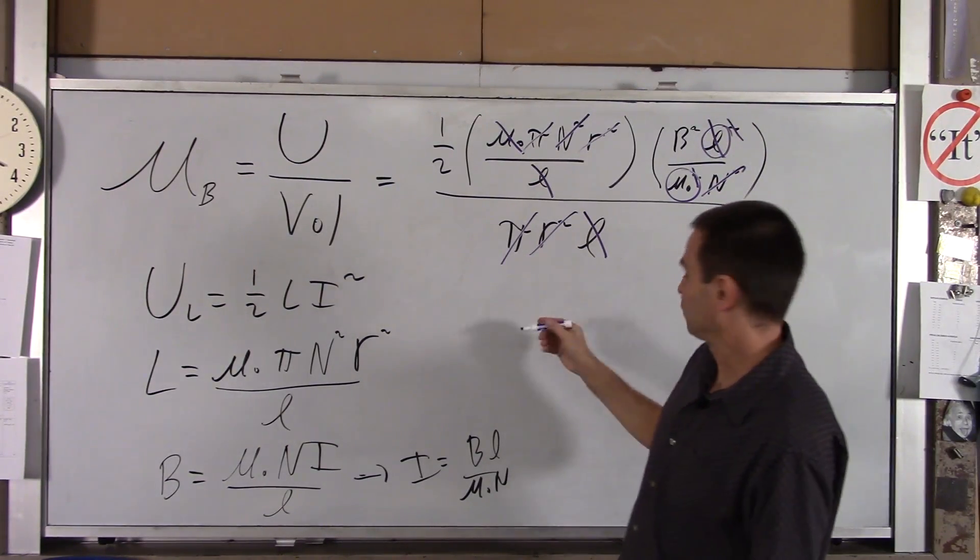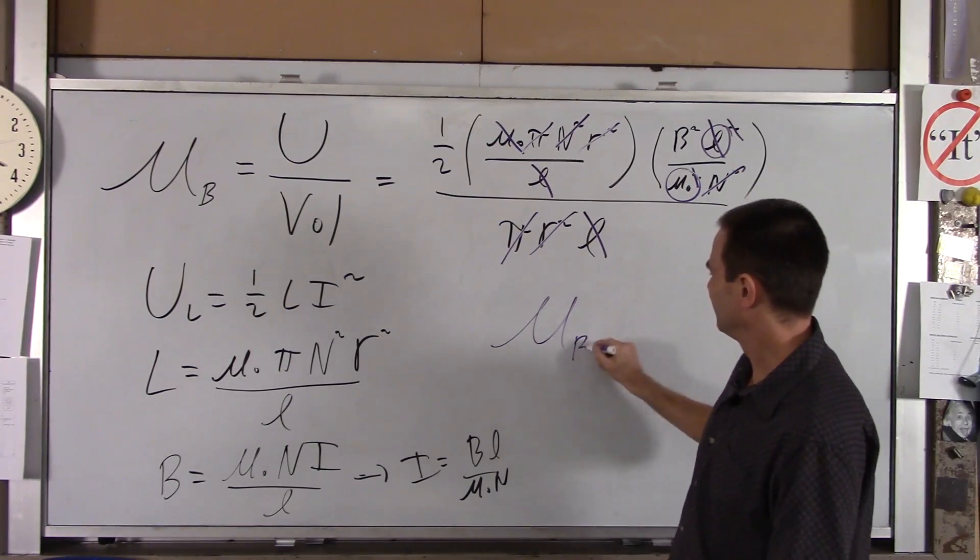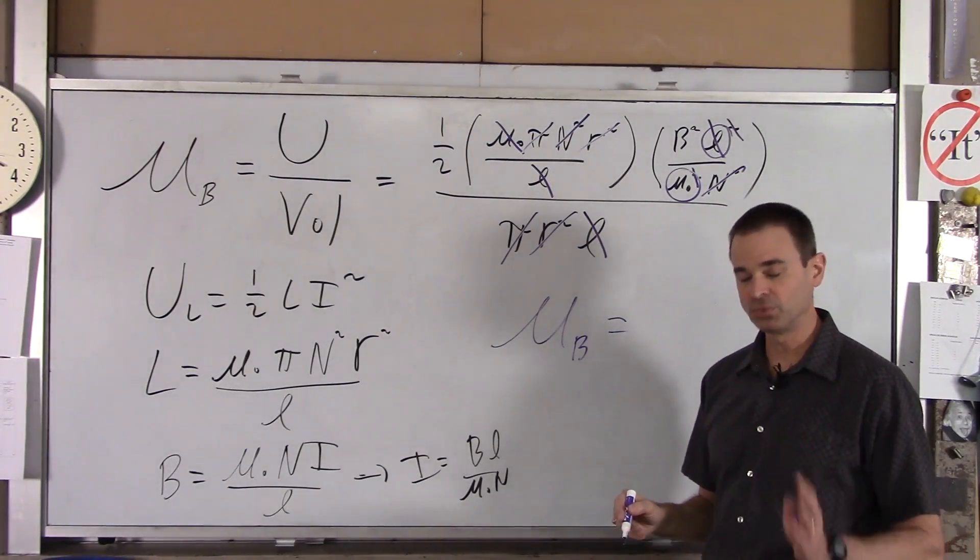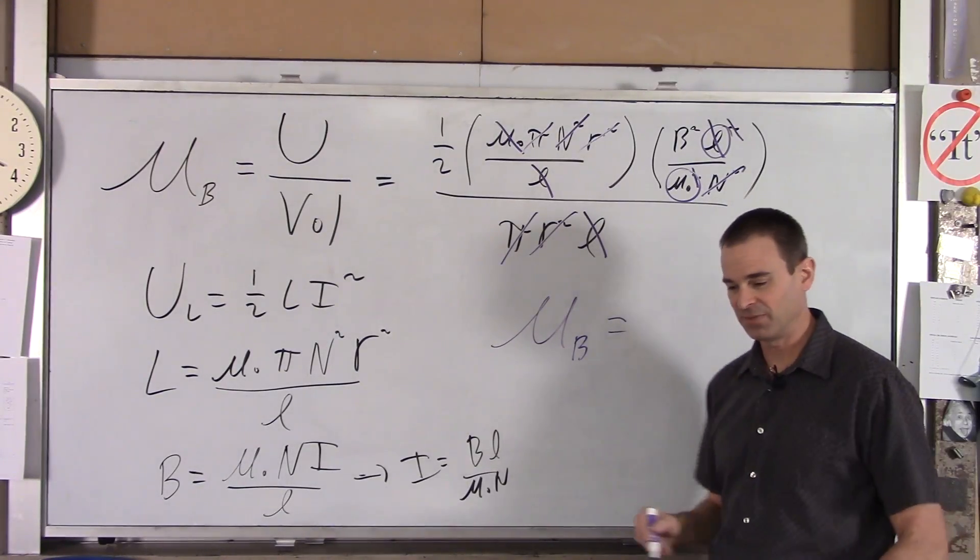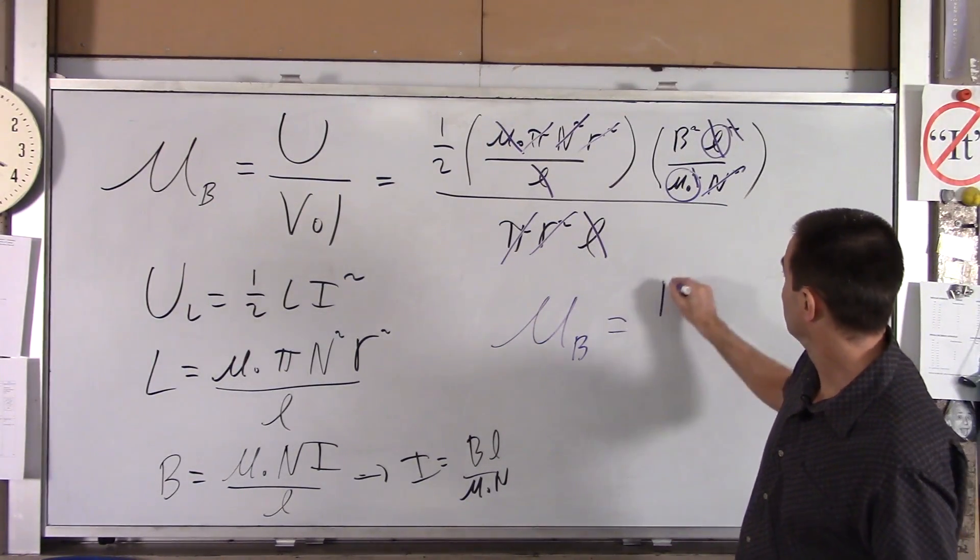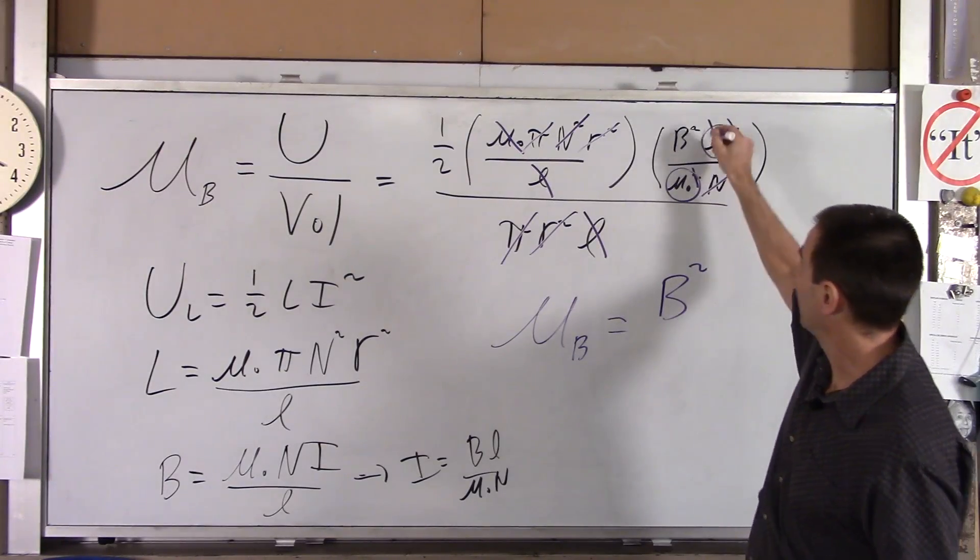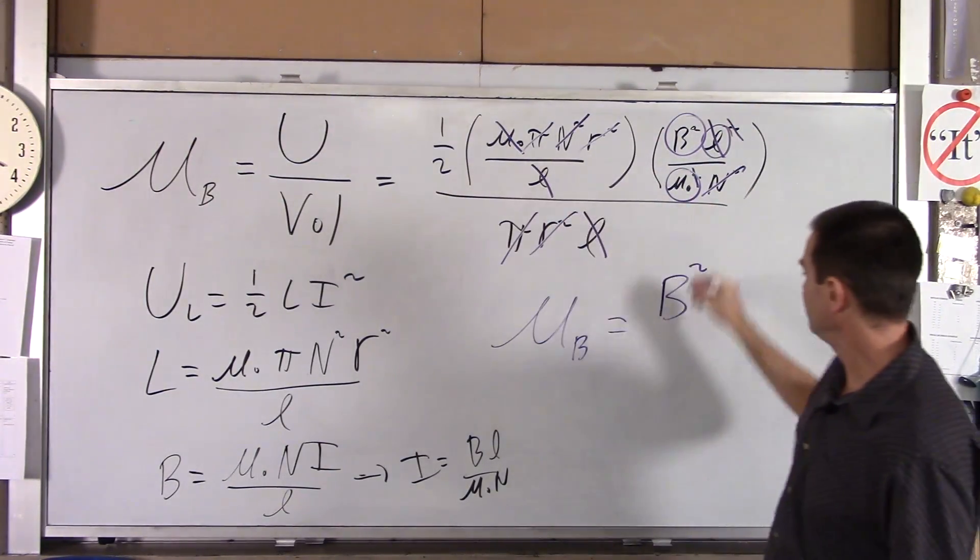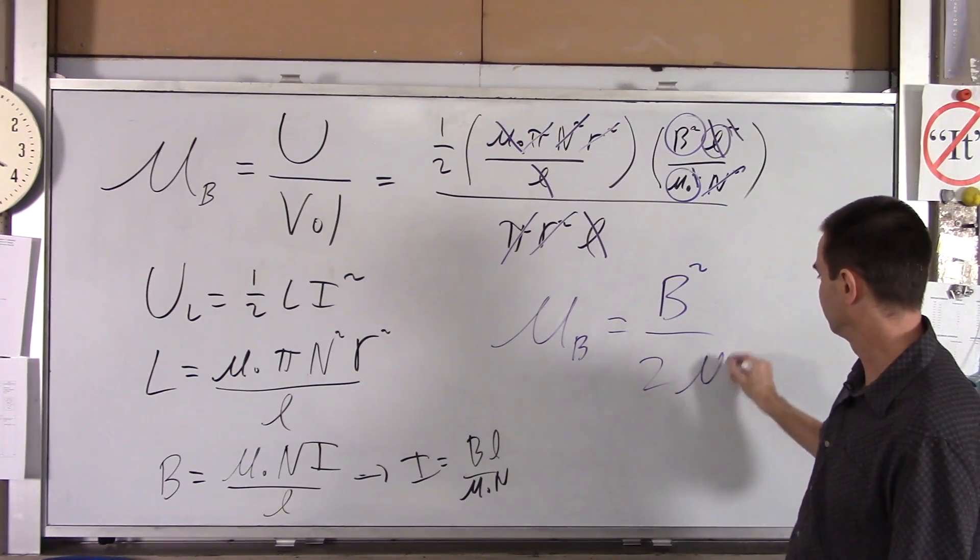So our answer, the energy density, that would be joules per meter cubed stored within the magnetic field of the solenoid would be B squared, we've got that left, over 2 μ naught.